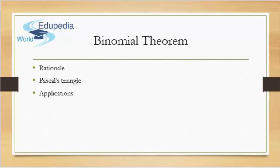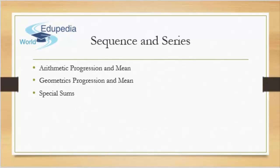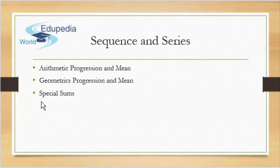After we're done with this, we'll be going through sequences and series. We'll be looking at two types of series: the arithmetic series and the geometric series. Within each, we'll be looking at two things — the arithmetic progression and the arithmetic mean, and the geometric progression and the geometric mean. After that, we'll be touching special sums as well.